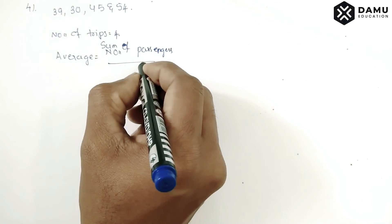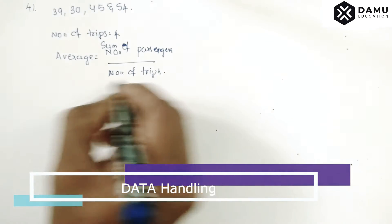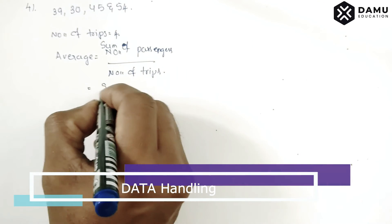Sum of number of passengers for all the trips divided by number of trips. Or you can write another formula: sum of all passengers divided by number of trips.